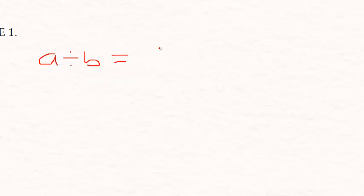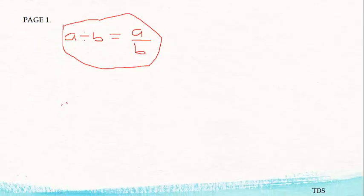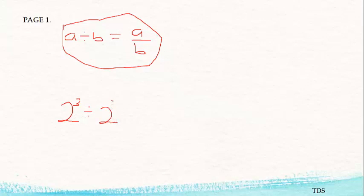Let's understand this: a over b is the same as a divided by b. I'm going to use this property to prove the result. First of all, let me use two to the power three as our example.